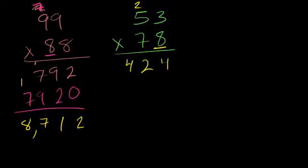Now we're going to have to deal with that 7, which is really a 70. So we've got to remember to put the 0 there. 7 times 3, let's get rid of this, 7 times 3 is 21. Put the 2 up here. 7 times 5 is 35 plus 2 is 37.